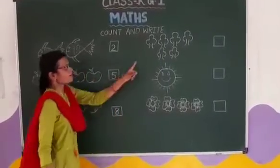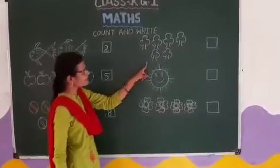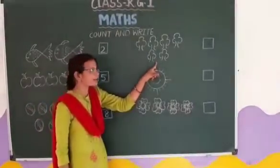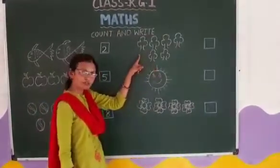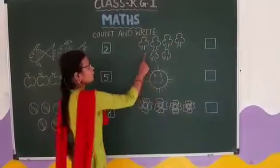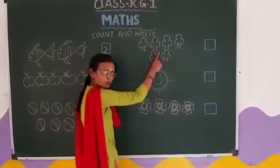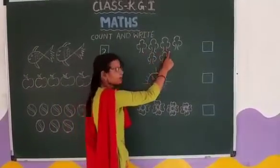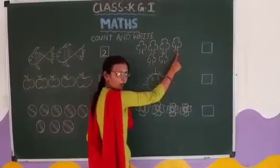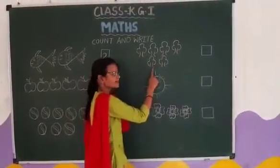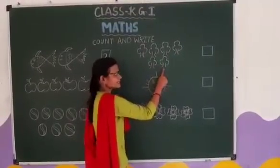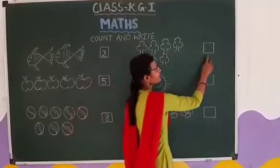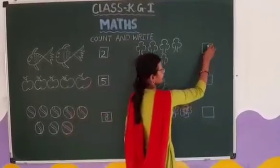Now, our next picture is 3. How many trees are here? Count with me. 1, 2, 3, 4, 5, 6. 6 trees. So we will write 6 here.